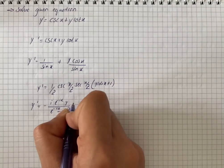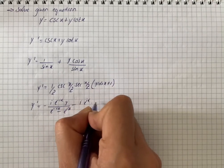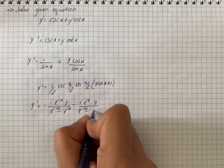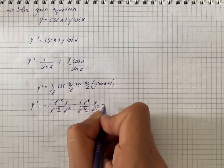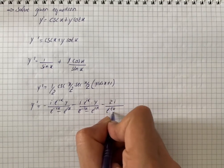Then we have i into e raised power i x into y divided by e raised power minus i x minus e raised power i x. Minus 2i divided by e raised power minus i x minus e raised power i x.